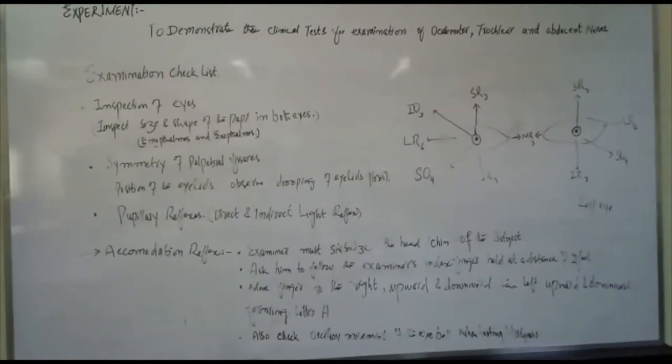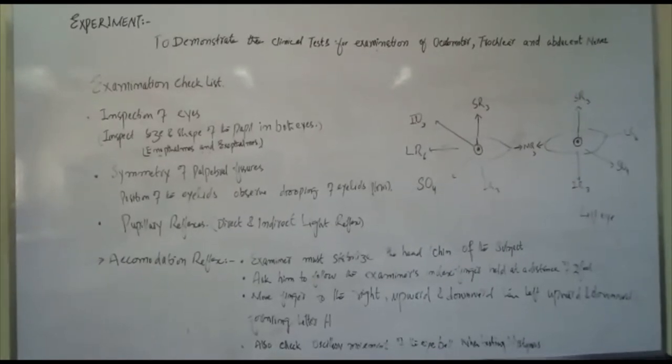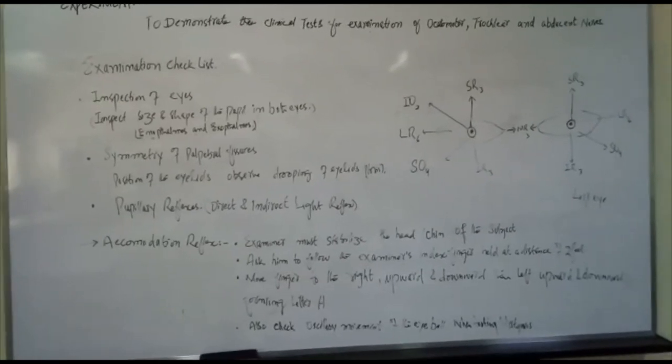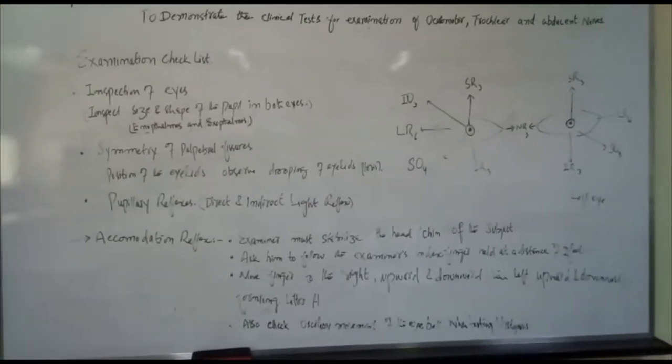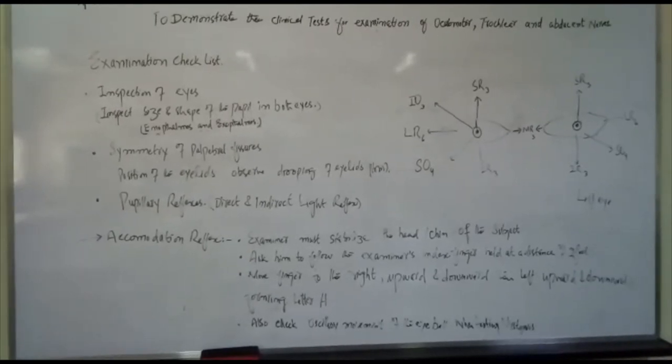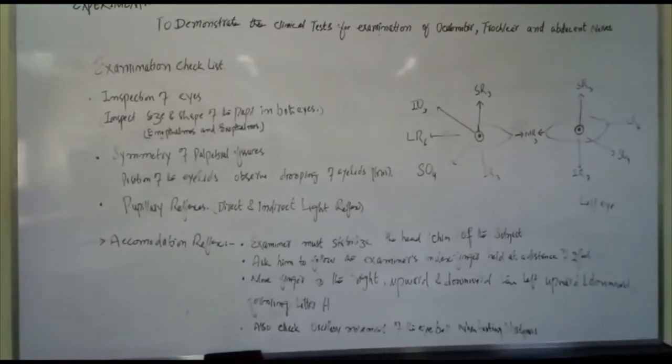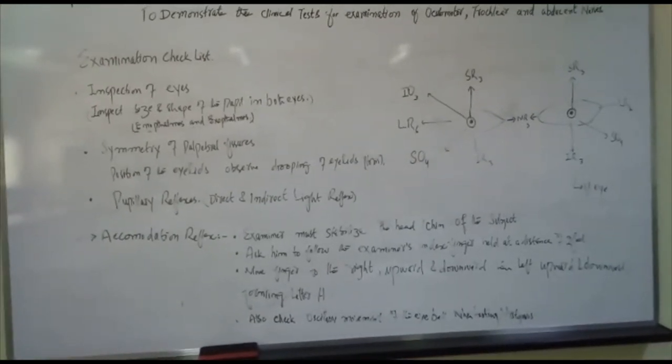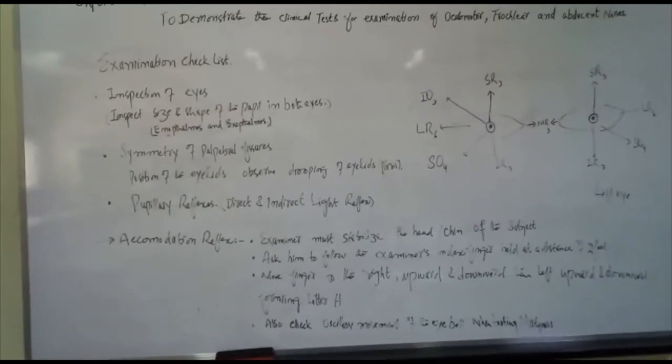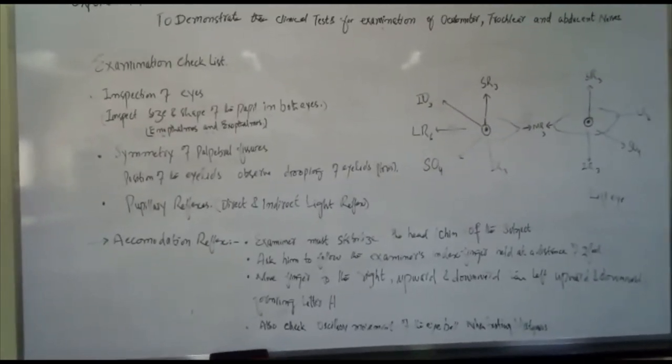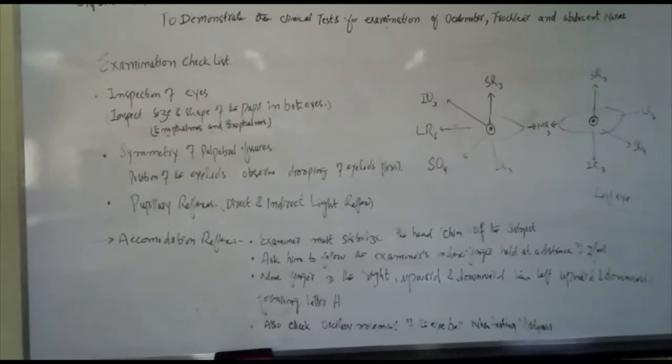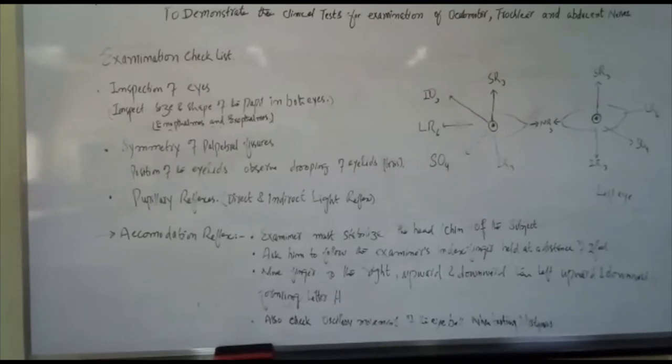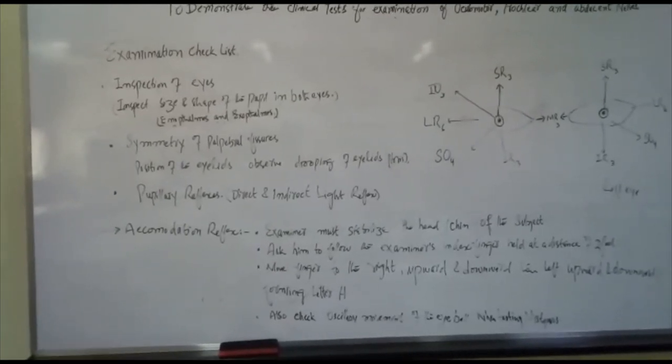In examination, we have to inspect the eyes, size and shape of the pupils in both eyes. If eyes are smaller, we call this enophthalmos. And if size of the eyes are larger and eyes are protuberant, it is called exophthalmos. We have to see symmetry of palpebral fissures, position of the eyelids, observe drooping of eyelids or ptosis. Pupillary reflexes, direct and indirect light reflex, refer to the experiment already done. Accommodation reflex.